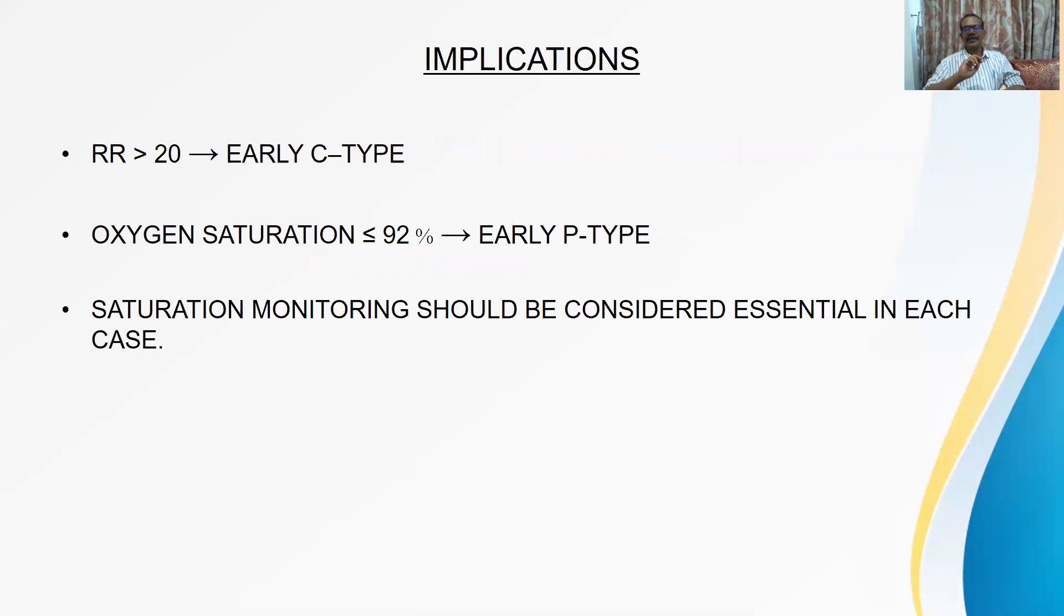Respiratory rate more than 20, it is going for early C-type. Saturation 92% or less is giving early indication of early P-type. Saturation monitoring must be considered essential in each case. So don't wait for patient to become distressed and then coming to you and then saying patient came late. No. Saturation monitoring and respiratory rate monitoring should be done in all cases of proven or suspected COVID.